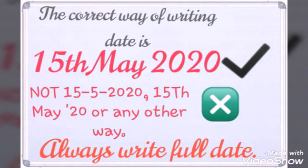The correct way of writing the date is: 15th May 2020. Not 15-5-2020, or 15th May 20, or any other shortened way. Always write the date in full.